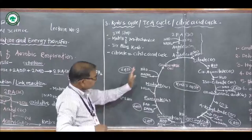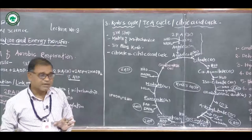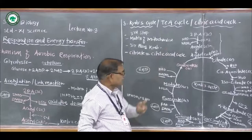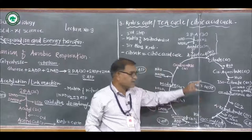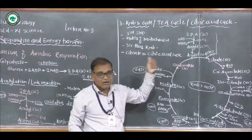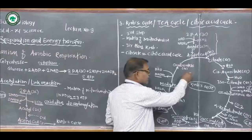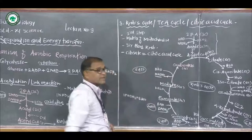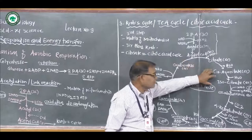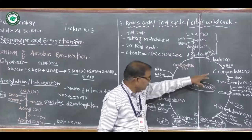Oxaloacetate is again combined with acetyl coenzyme A to form citric acid, and the cycle continues within the matrix of mitochondria. The Krebs cycle forms a number of intermediate compounds: citrate, aconitate, oxaloacetate, alpha-ketoglutarate, succinyl coenzyme A, succinate, fumarate, malate, and oxaloacetate. These organic acids contain carboxylic acid groups, hence the cycle is also called the tricarboxylic acid cycle (TCA cycle).